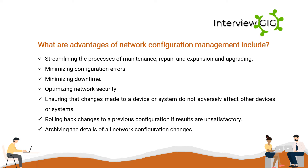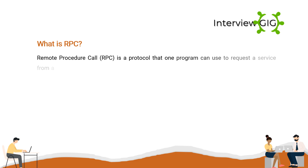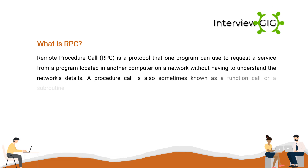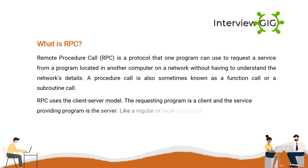What is RPC? Remote Procedure Call (RPC) is a protocol that one program can use to request a service from a program located in another computer on a network without having to understand the network's details. A procedure call is also sometimes known as a function call or subroutine call. RPC uses the client-server model: the requesting program is the client and the service-providing program is the server.